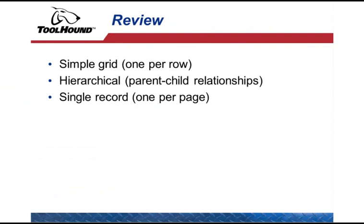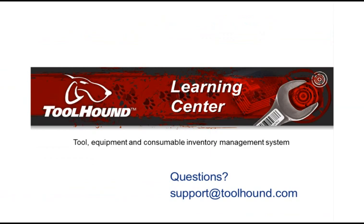Let's review. The three types of pick lists are: simple grid with one entry per row, hierarchical that use two levels for grouping, and single record per page. Thanks for watching this video from the ToolHound Learning Center.